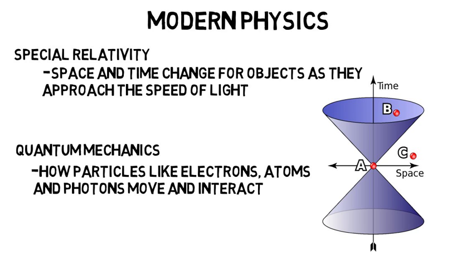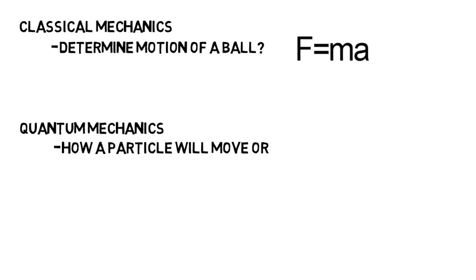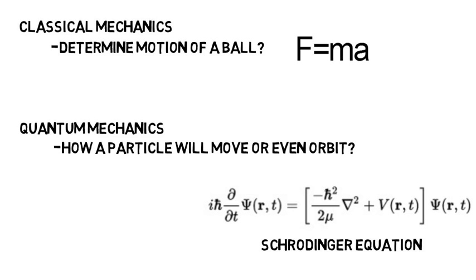Whereas in classical mechanics, if you want to determine the motion of a ball, let's say, you use force equals mass times acceleration, or F equals MA. In quantum mechanics, for how a particle will move or even orbit, you use the Schrodinger equation. Don't let it scare you, you're years away from ever seeing this, but you can see how math involved physics really is.